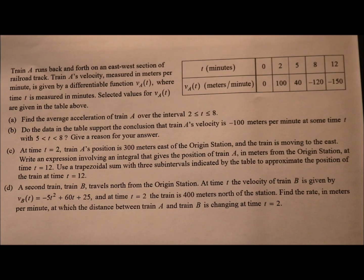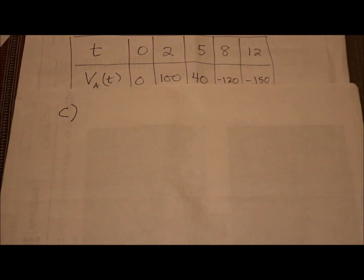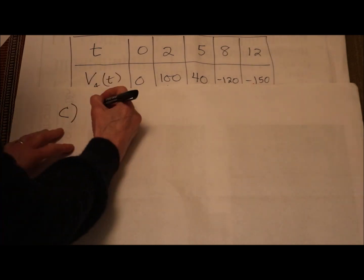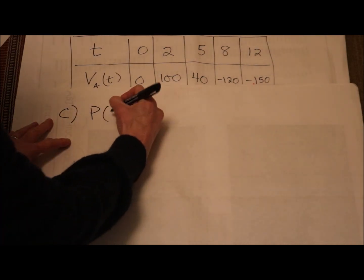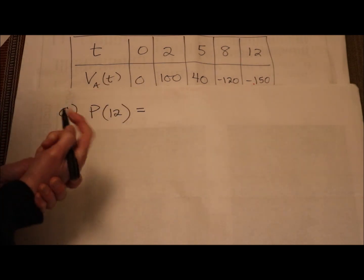Part c. At time t equals 2, train A's position is 300 meters east of the origin station and the train is moving to the east. Write an expression involving an integral that gives the position of train A in meters from the origin station at time t equals 12. Use a trapezoidal sum with three subintervals indicated by the table to approximate the position of the train at time t equals 12.